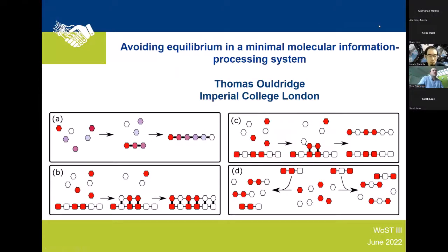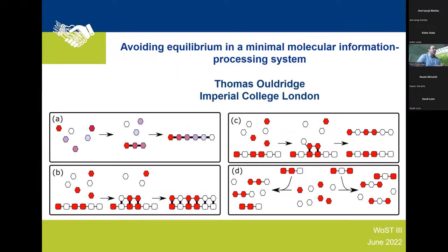The next speaker is Thomas Aldridge and the title is 'Avoiding Equilibrium in a Minimal Molecular Information Processing System.' Today I'd like to give a quite conceptual level overview of a project that's at the heart of what my group does — going all the way from basic theory through to actual experiments with pipettes in the lab.